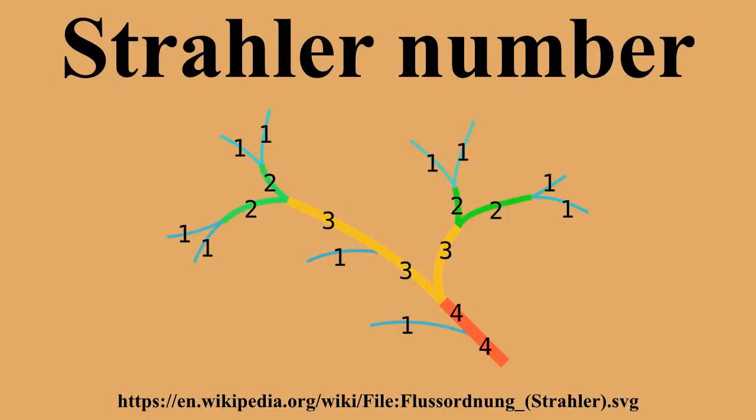In the application of the Strahler stream order to hydrology, each segment of a stream or river within a river network is treated as a node in a tree, with the next segment downstream as its parent. When two first-order streams come together, they form a second-order stream. When two second-order streams come together, they form a third-order stream. Streams of lower order joining a higher-order stream do not change the order of the higher stream. Thus, if a first-order stream joins a second-order stream, it remains a second-order stream. It is not until a second-order stream combines with another second-order stream that it becomes a third-order stream.